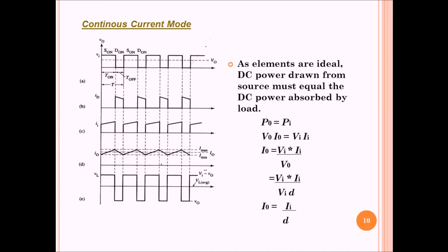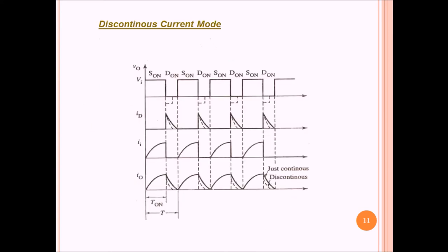Continuous current mode is possible only when we consider the elements in ideal conditions. That means the power supplied by the DC source is equal to the power absorbed by the load. These are the cycles for the discontinuous current mode.